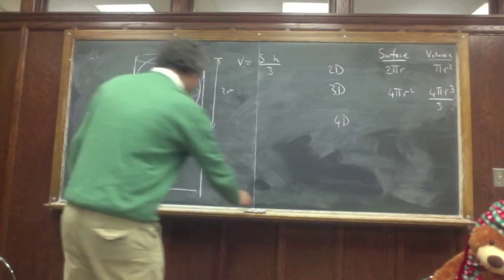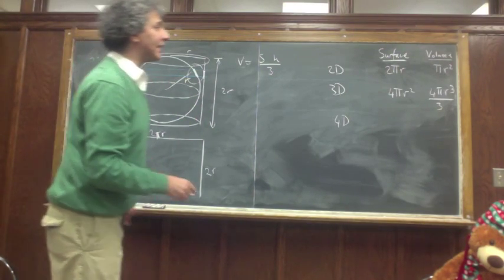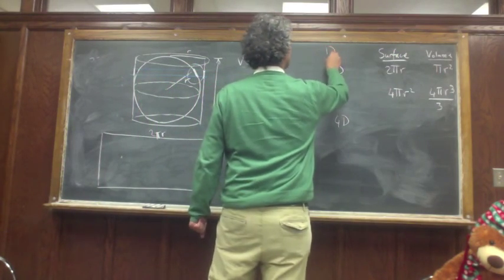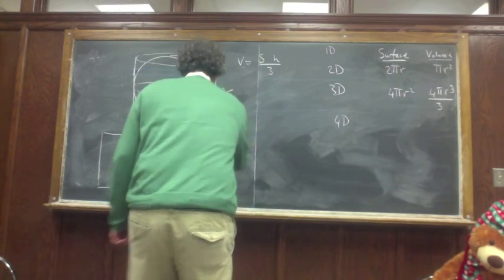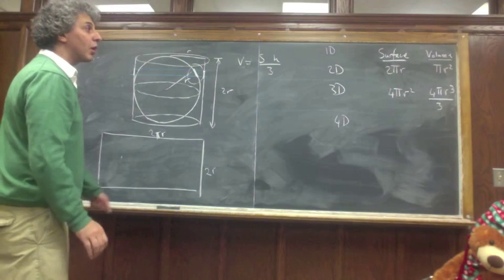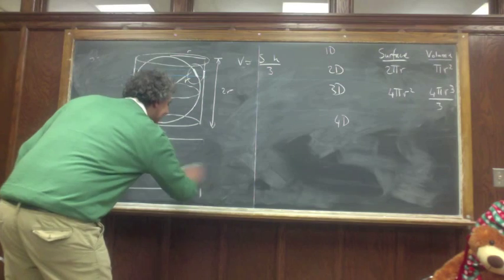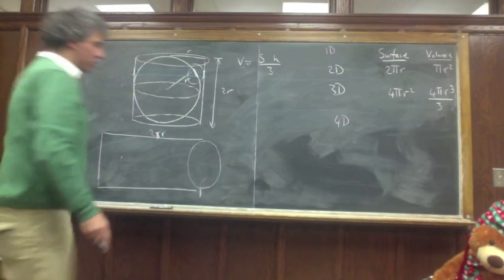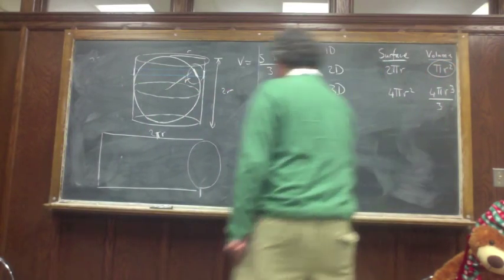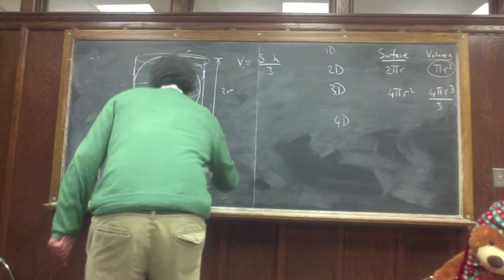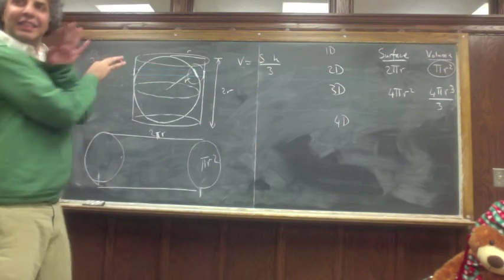So what would that object look like? The 2-dimensional cylinder is this: you take a 1-dimensional object, just the length, and fold it. What you need to do to make the 4-dimensional cylinder is you need to take a 3-dimensional object — this is a circle with an area of pi r squared — and you fold it.